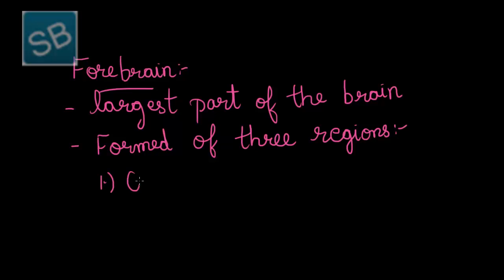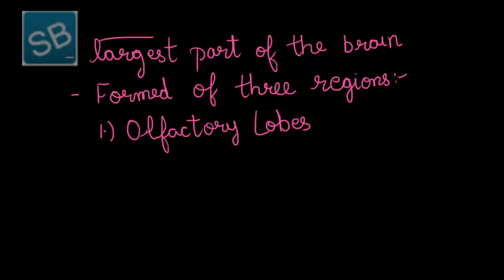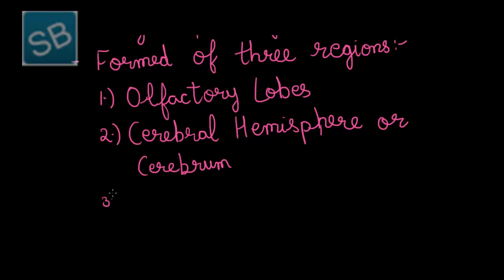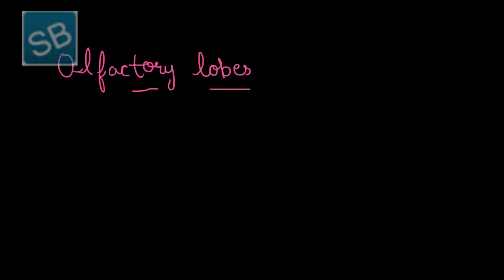The first region is the olfactory lobes. The second is the cerebral hemisphere or cerebrum. The third is the diencephalon. Let us first understand the structure of the olfactory lobes.